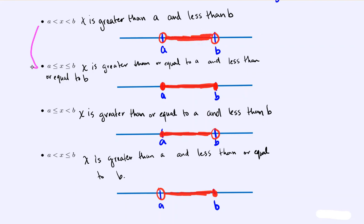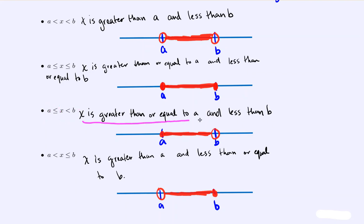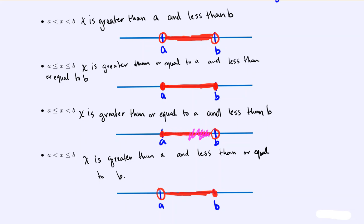If we now allow equality at both a and b, we just make solid circles at both. In the next variant, x is greater than or equal to a but less than b: a gets a solid circle, b gets an open circle, and we shade the middle. The final variant switches it — x is strictly greater than a but less than or equal to b — so a has an open circle, b has a solid circle, and we still shade the middle.